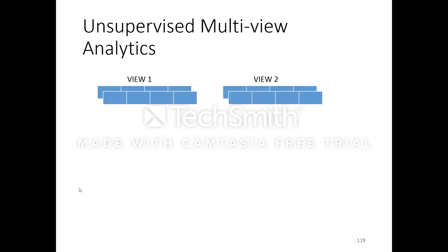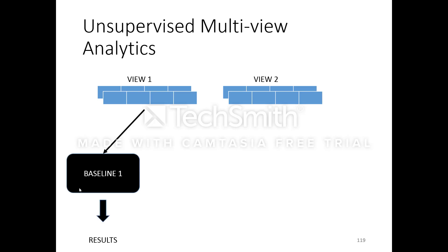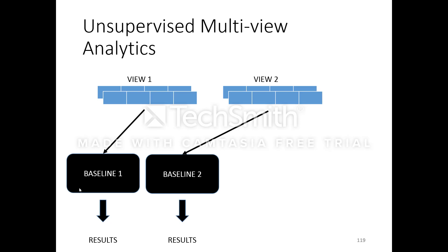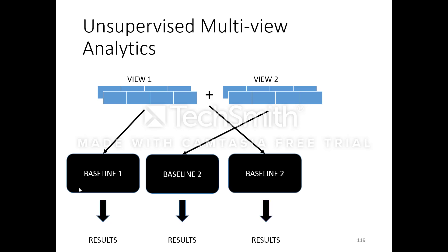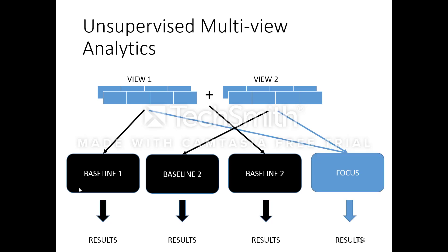Visually, you have view-one and view-two data representing the same objects with one-to-one correspondence. You apply the uniview baseline algorithm on view-one data, then on view-two data, and then concatenate the two views to form a joint uniview dataset for a third baseline. The focus of multi-view learning is to understand the intricacies of these views and combine them to outperform all three baselines.